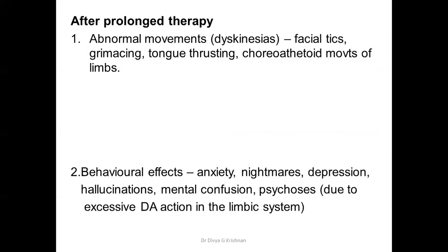After prolonged therapy — many years — abnormal movements called dyskinesias can develop, involving facial tics, grimacing, trunk thrusting, and choreoathetoid movements of the limbs. The patient can also develop behavioral effects ranging from anxiety, nightmares, and depression to hallucinations, mental confusion, and even frank psychosis. This is due to excessive dopamine in the limbic system, which controls emotions. The dopamine meant for the substantia nigra reaches the limbic system and causes these unwanted behavioral effects.